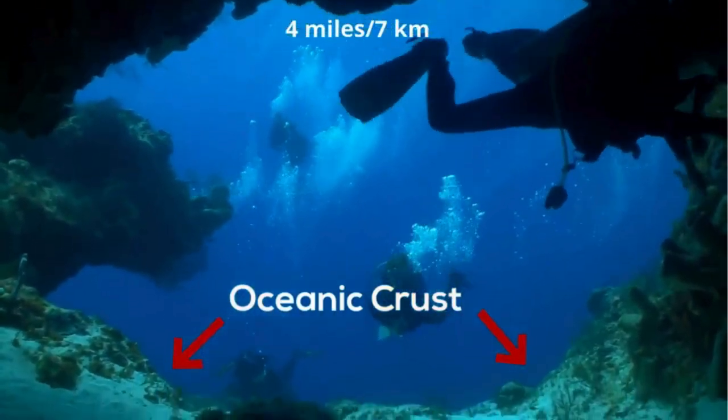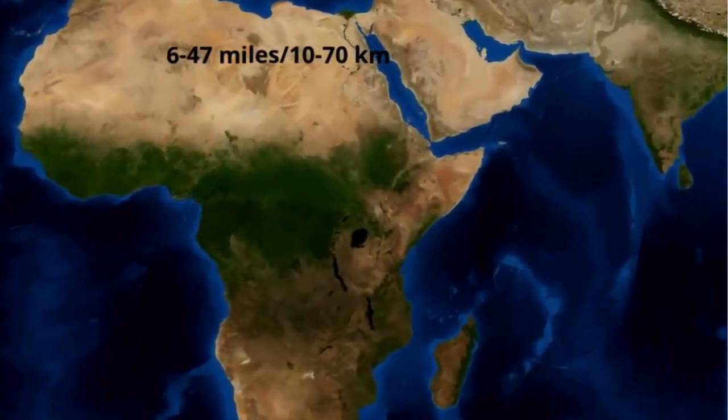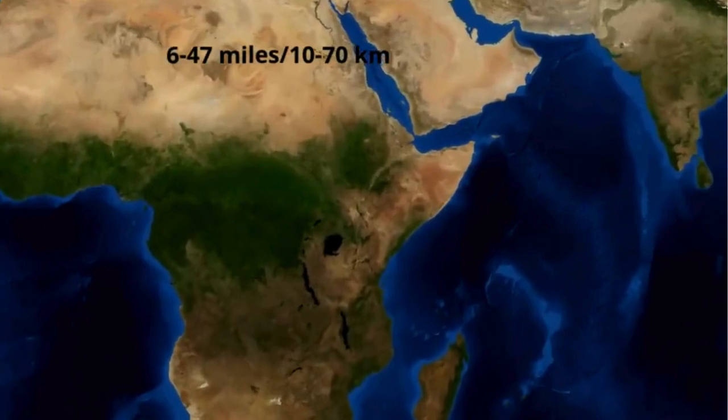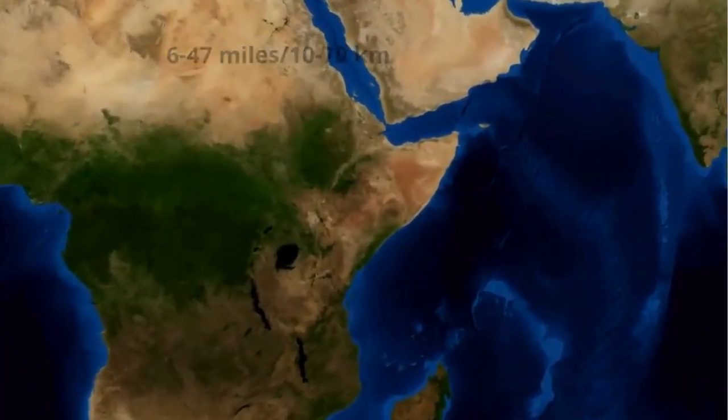Continental crust is thicker and ranges from 6 to 47 miles or 10 to 75 kilometers in thickness and has a high abundance of less dense igneous rock like granite.